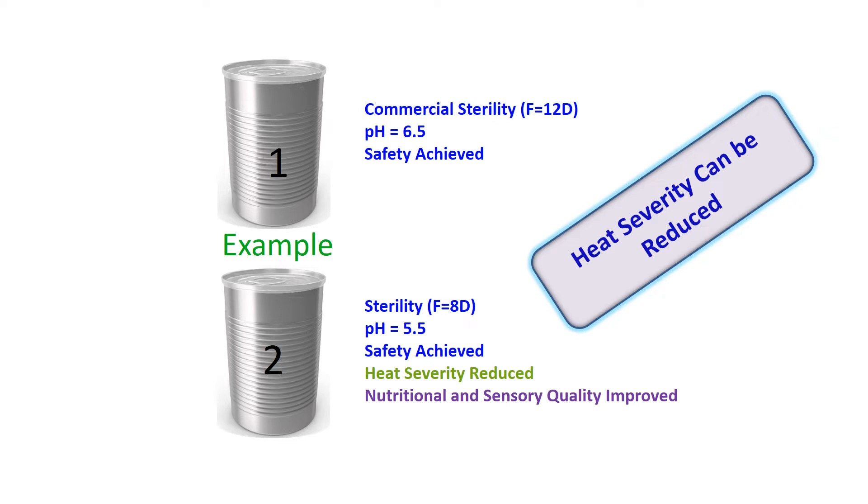Or combined method of food preservation. Each preservation method is a hurdle. In this case, we have played with two hurdles: pH and heating intensity. At present, around 60 hurdles are being used in food preservation.